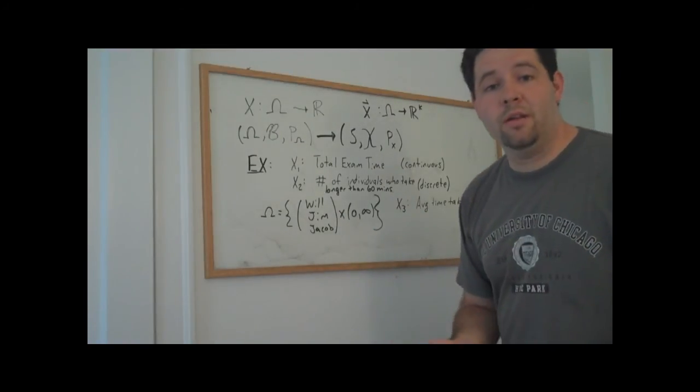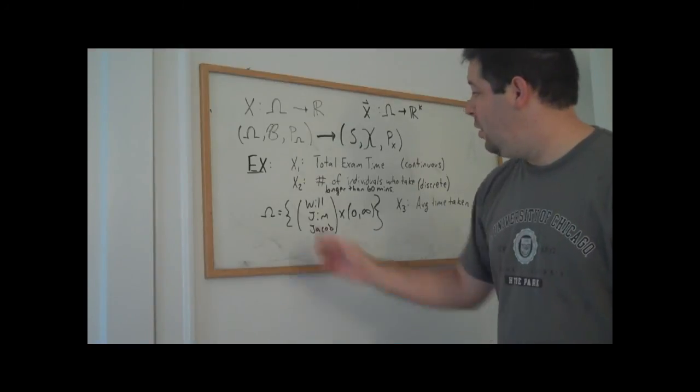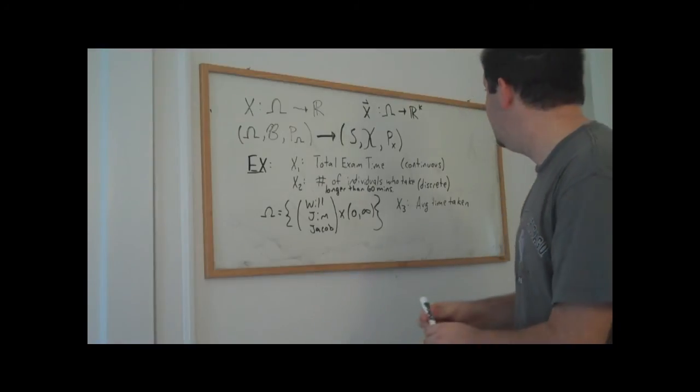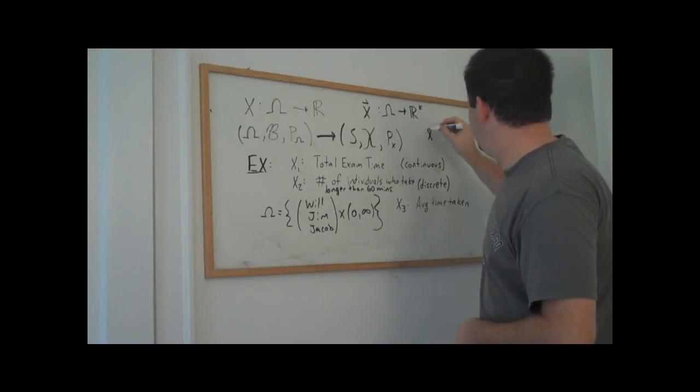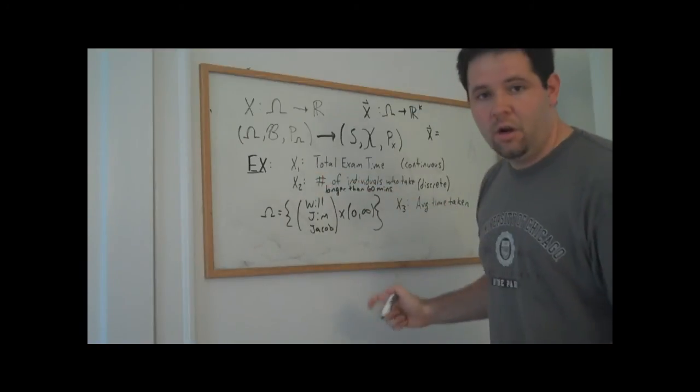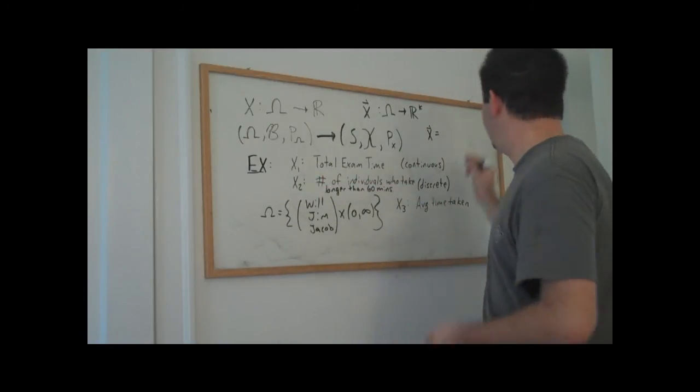So for example, if we wanted an example of a random vector, well we've already defined three random variables from this same experiment. We could define a random vector as a vector containing these three random variables.